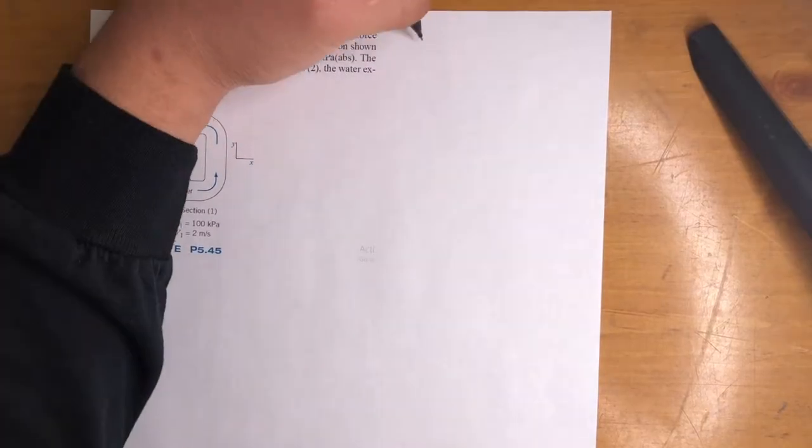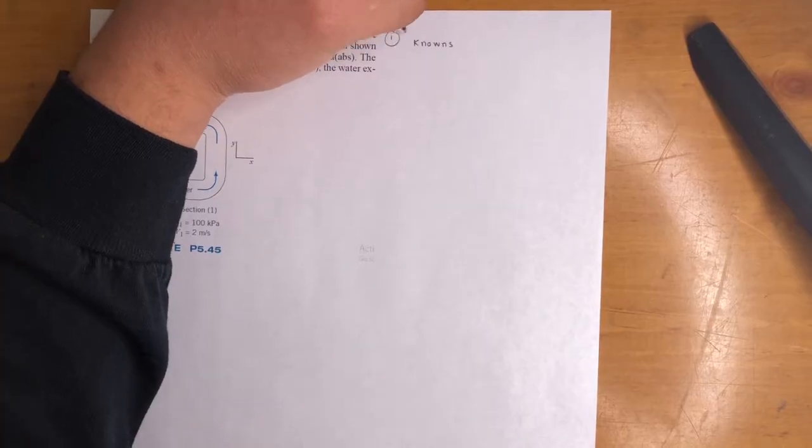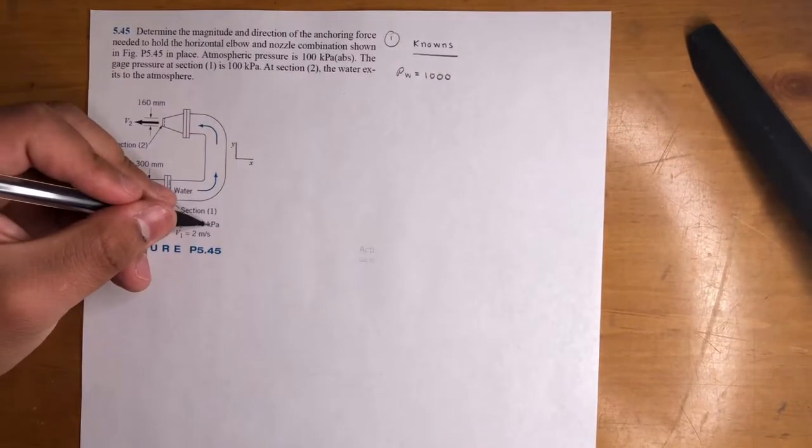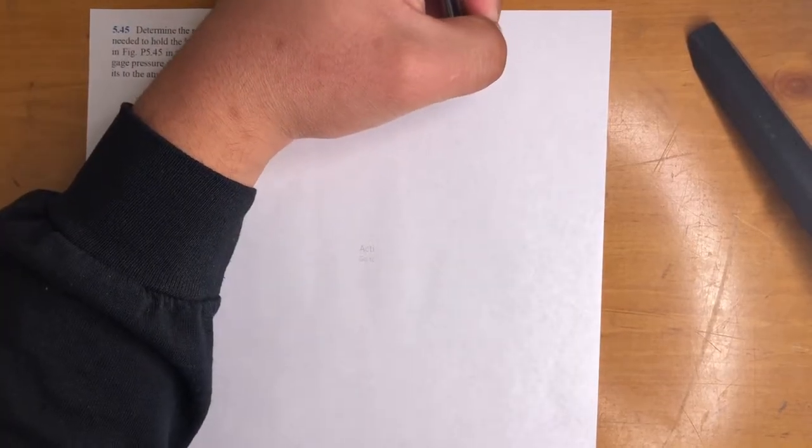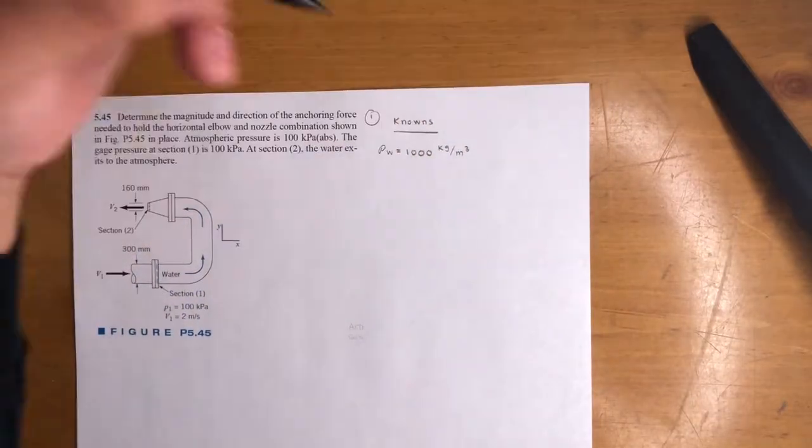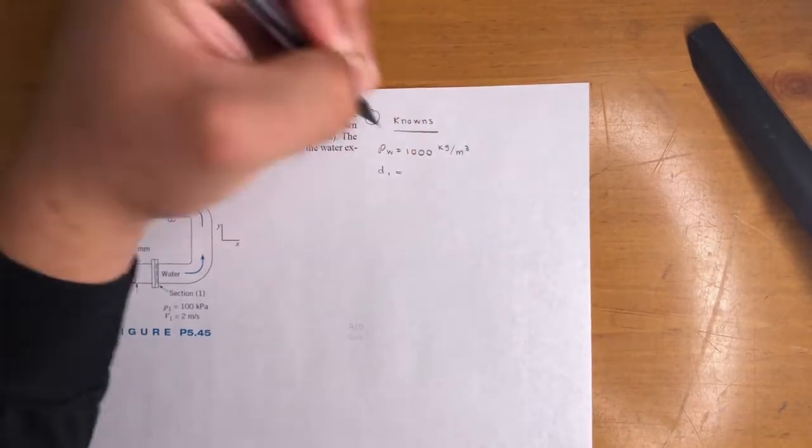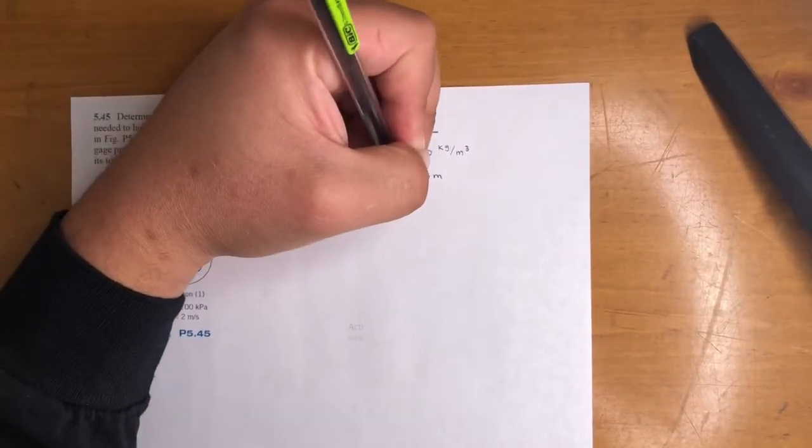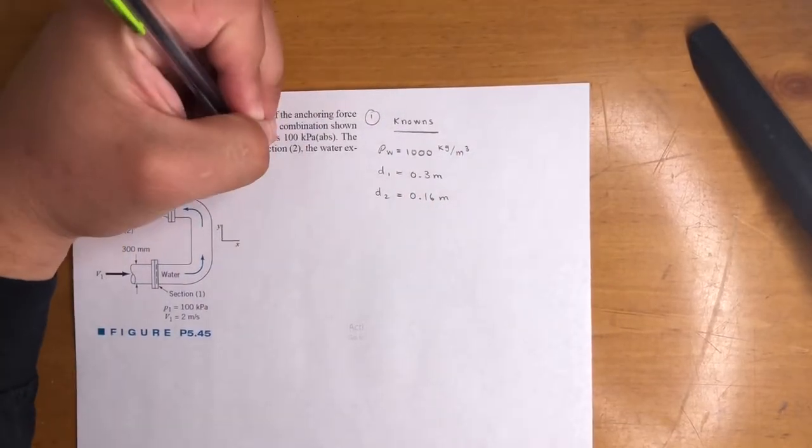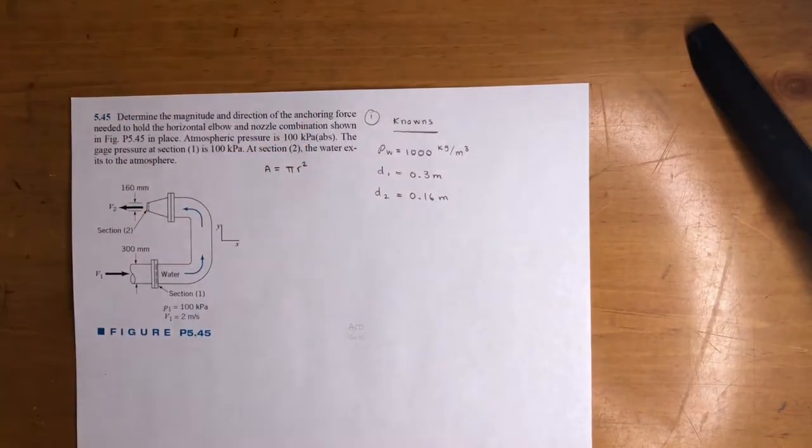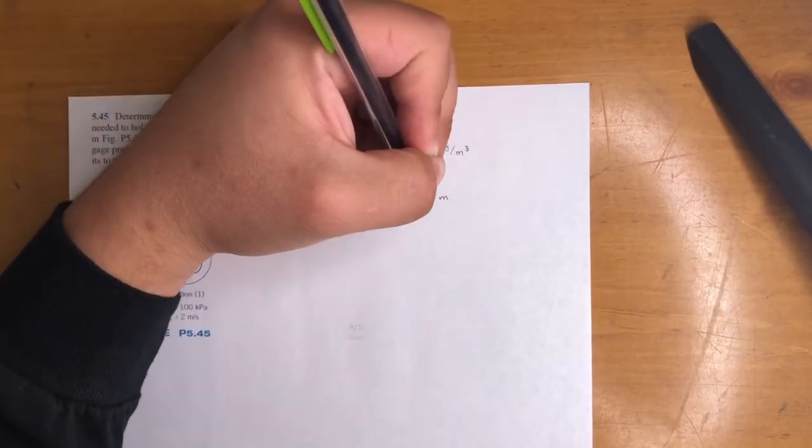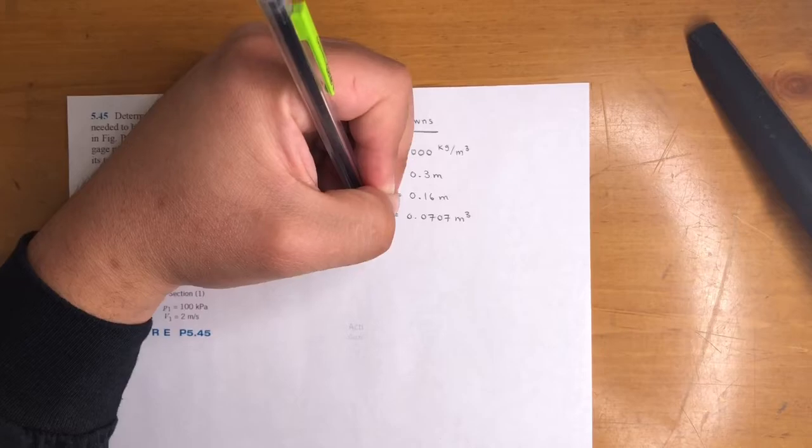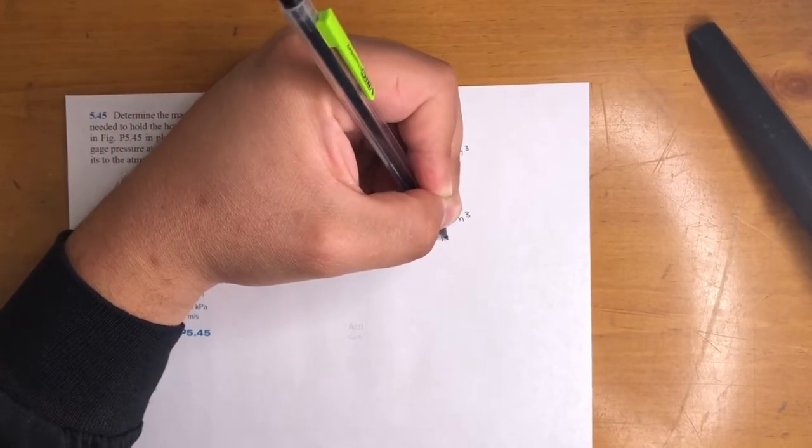Alright, first step: knowns. We are dealing with water, so density of water is 1000 kilograms per meter cubed. We got the diameter, so D1 is 0.3 meters, D2 is 0.16 meters. Area, that's just pi r squared. So doing that, we can get the areas: A1 will be 0.0707 meters squared, and A2 is 0.0201 meters squared.